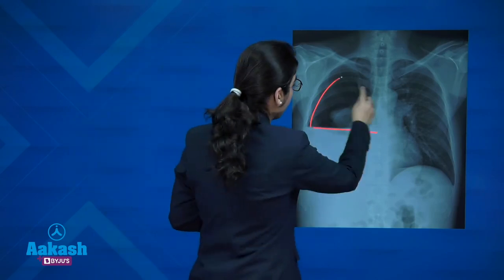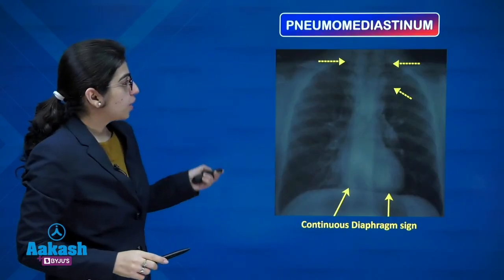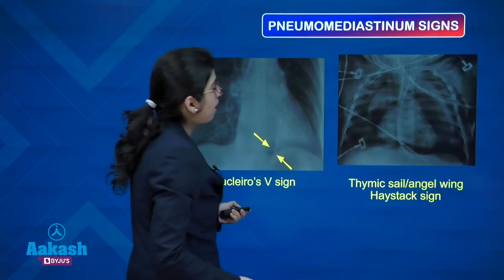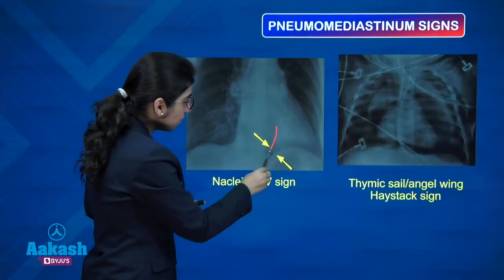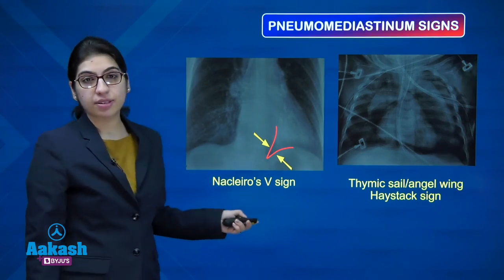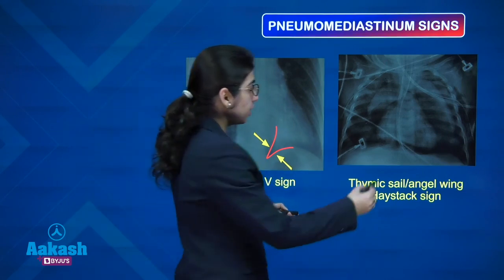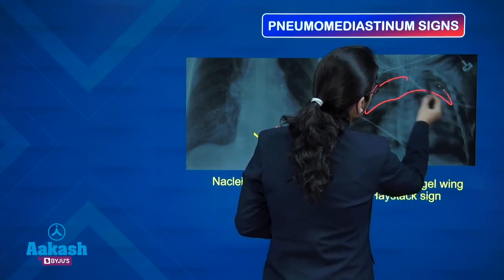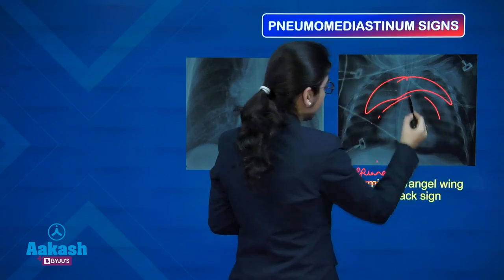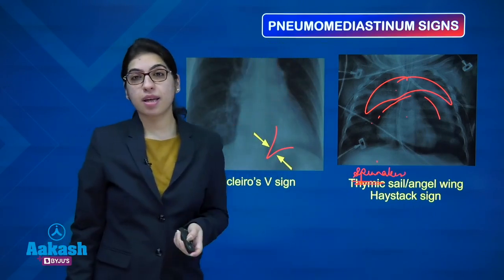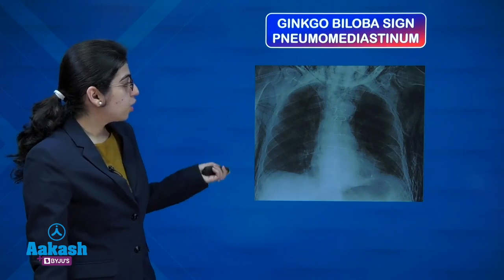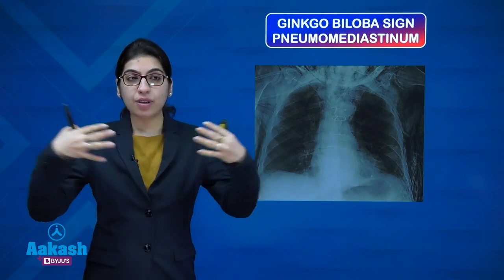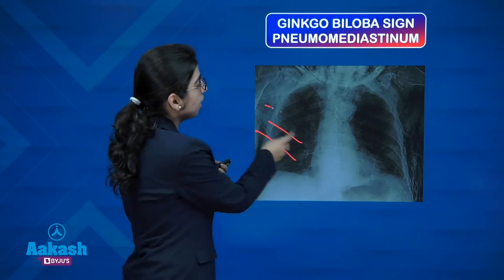Hydropneumothorax shows air above a fluid level. Pneumomediastinum always produces a continuous diaphragm sign. Other signs include the V-lucency near the cardiophrenic angle — the Naclerio V sign — and the Spinnaker sail sign, where thymic lobes are lifted by air between the thymus and cardiac shadow. In patients with subcutaneous emphysema and pneumomediastinum, air dissecting within the pectoralis major muscles produces the Ginkgo biloba sign.